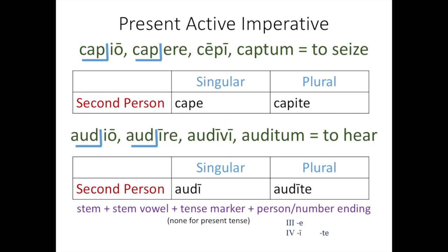And then audite is the exact same thing: stem, stem vowel, the long I, and your person number endings TE.